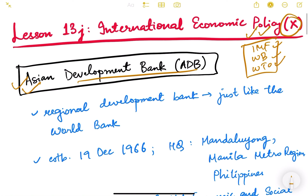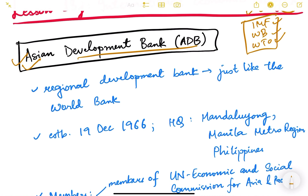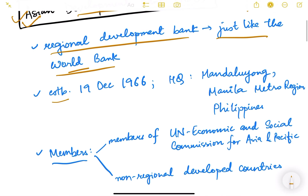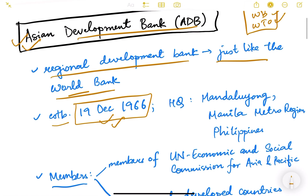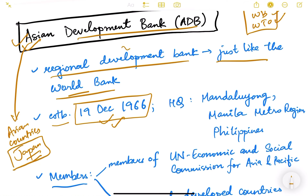The Asian Development Bank is a regional development bank, just like the World Bank. It was established on 19th December 1966. The name is Asian Development Bank because the leadership in establishing this bank was of the Asian countries, especially Japan. Japan was an Asian power in the 1900s and took the leadership to establish this regional development bank.